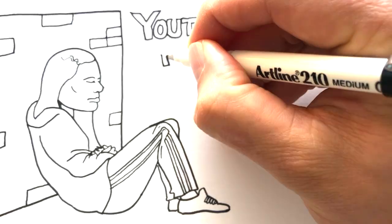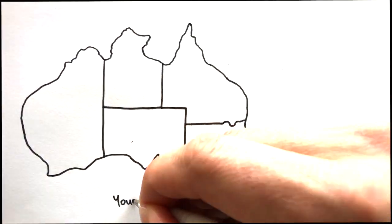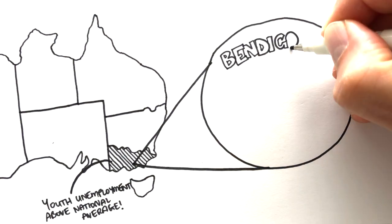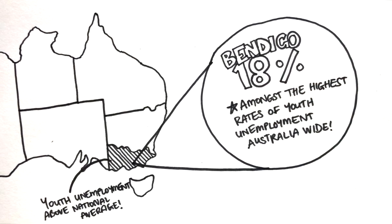At the same time, youth unemployment in Victoria sits at around 11.4%, a figure which is above the national average. In the West sits Bendigo, where youth unemployment sits at 18%, one of the highest in the country.